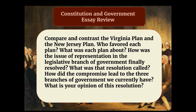Just a reminder, the essay prompt is: compare and contrast the Virginia Plan and the New Jersey Plan. Who favored each plan? What was each plan about? How was the issue of representation in the legislative branch of government finally resolved? What was that resolution called? How did the compromise lead to the three branches of government we currently have? And what is your opinion of this resolution? That's a lot to unpack. It is a minimum of three paragraphs, with a fourth paragraph having to do with your opinion. I'm going to talk you through the three paragraphs that have meat and substance to them. The opinion paragraph you're going to have to write yourself, because I cannot tell you what your opinion is.